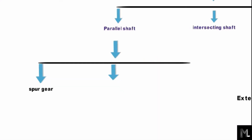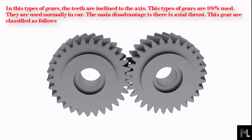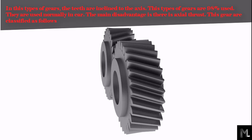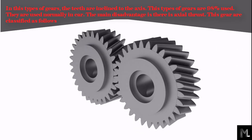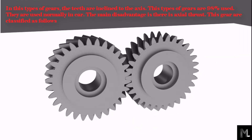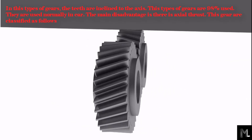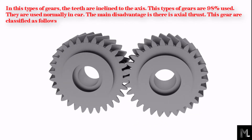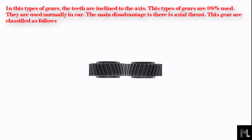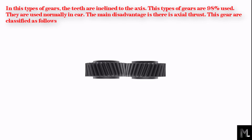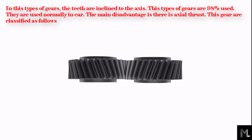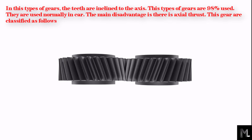The second type is helical gear. In this type of gear, the teeth are inclined to the axis. This type of gear is 98% used and is normally used in cars. The main disadvantage is that there is axial thrust.